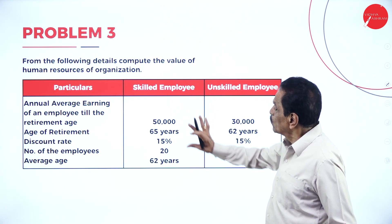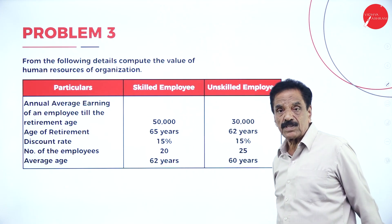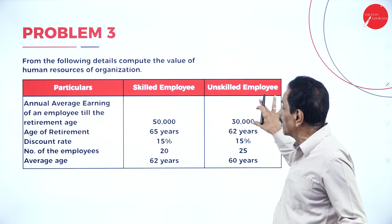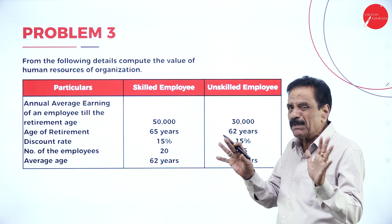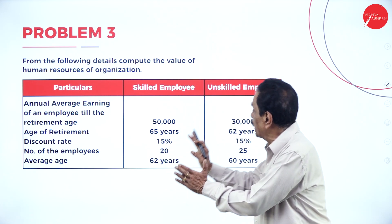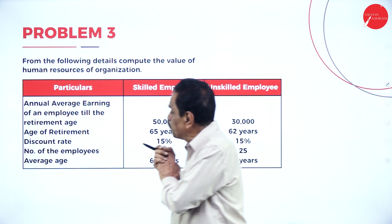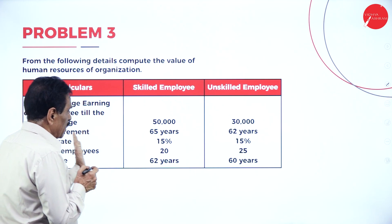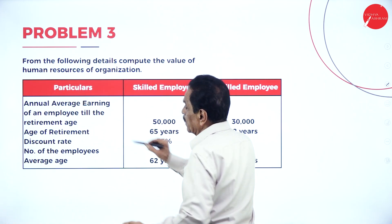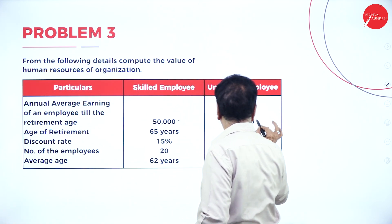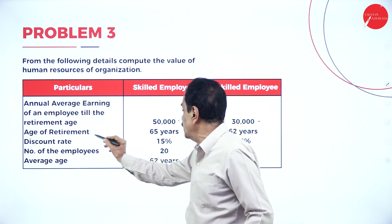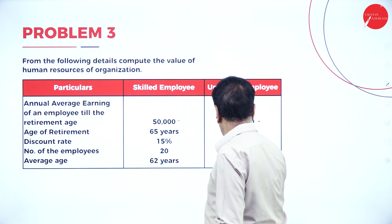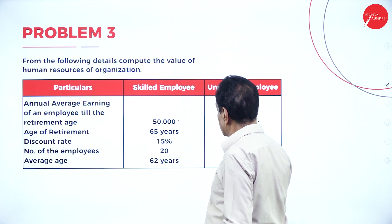Now the last problem. There are two types of employees: skilled employees and unskilled employees. The skilled employee gets an annual salary of 50,000 with a retirement age of 65 years, and the unskilled employee gets 30,000 with a retirement age of 62 years. The discount rate is 15%. The average age of skilled employees is 62 years and unskilled is 60 years.